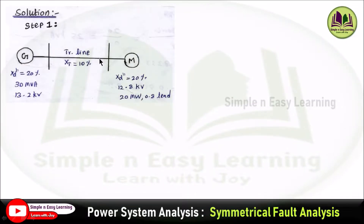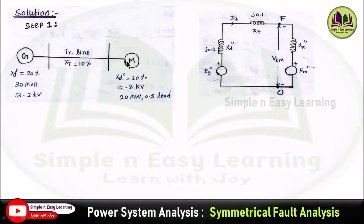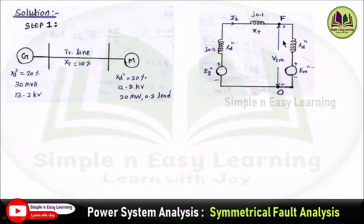Solution. Step 1: Draw the single line diagram with a generator, a transmission line of reactance X_T equal to 10%, and a motor. The fault occurs at the motor terminal. In the equivalent circuit, E_G'' feeds through the generator reactance of 20% (j0.2), load current flows through the transmission line reactance j0.1, and the motor end has j0.2 (20%) again. The terminal voltage V_TM is specified as 12.8 kV, and this is the fault location F.